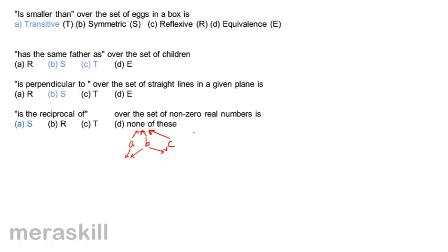Now consider 'is shorter than'. If A is shorter than B, B is not shorter than A — B is taller — so no symmetry. If A is shorter than B and B is shorter than C, then A is shorter than C — so transitivity holds. There is only transitivity in this case.